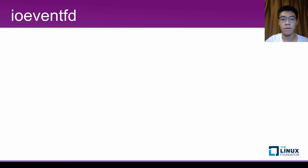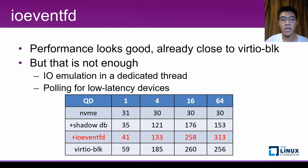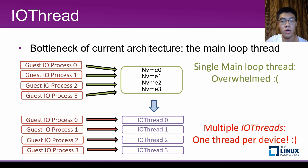With IOEventFD, we are already close to VirtIO block, but there is potentially more to be gained. We want IO emulation in a dedicated thread without interference from other devices. We also want to poll the submission queue for new entries to bring command submission latency to a minimum. In the current architecture, all devices are emulated in QEMU's main loop thread, which makes it a bottleneck. However, with QEMU's IO thread feature, we are able to use one thread for each device without interference between these devices.